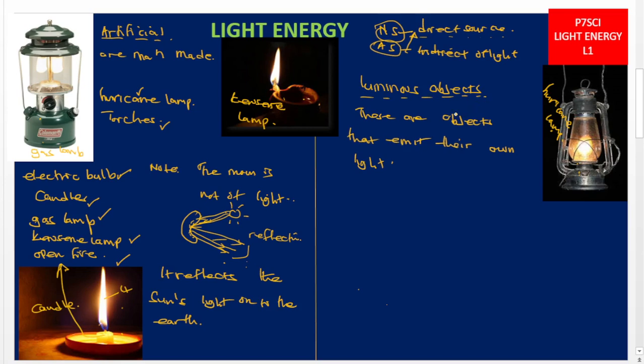All natural and artificial sources of light are luminous objects, meaning they can emit their own light. The candle, the electric bulb, the sun, the stars — they don't get light from any other source; they give out light energy themselves. So if an exam question asks for a luminous object, you can give artificial examples like the kerosene lamp or candle, or natural examples like the sun, stars, or lightning.